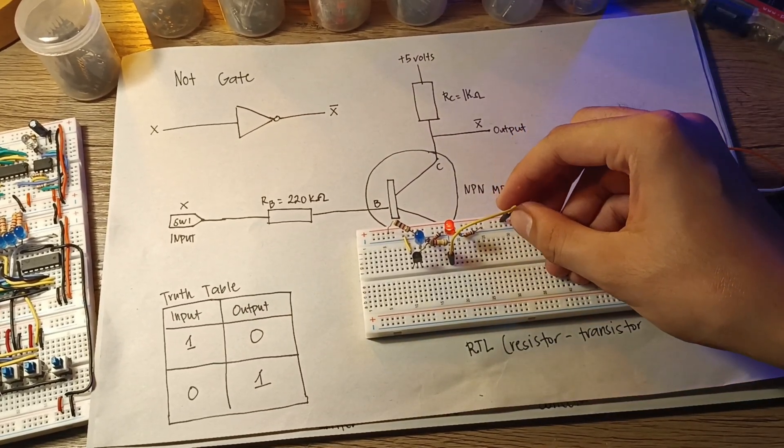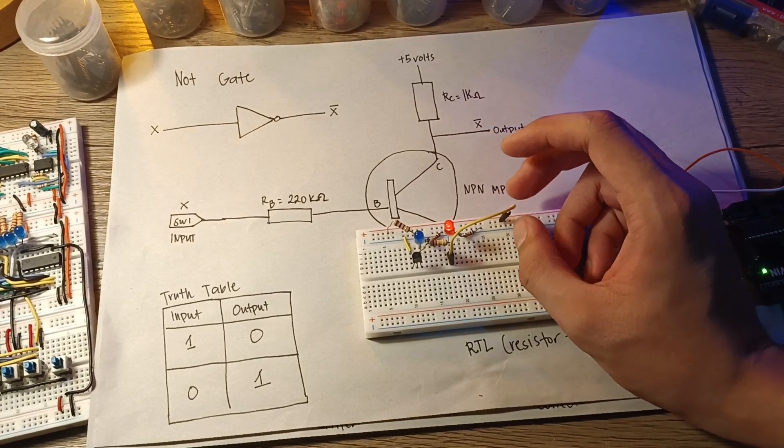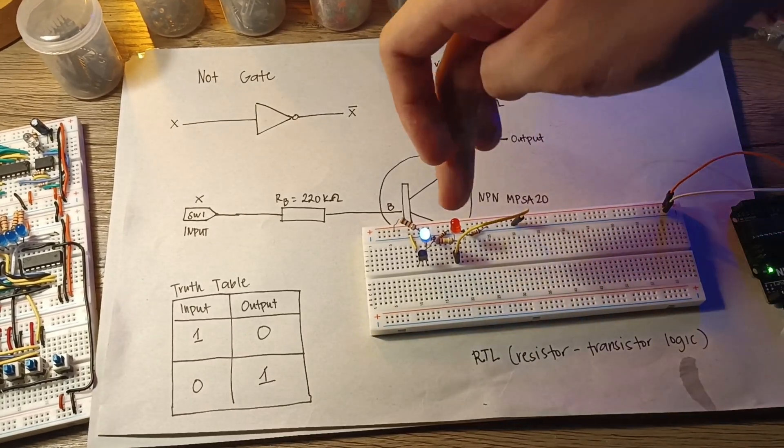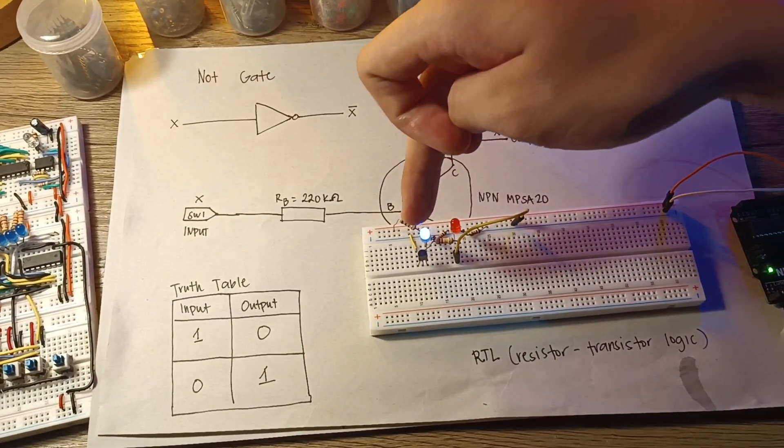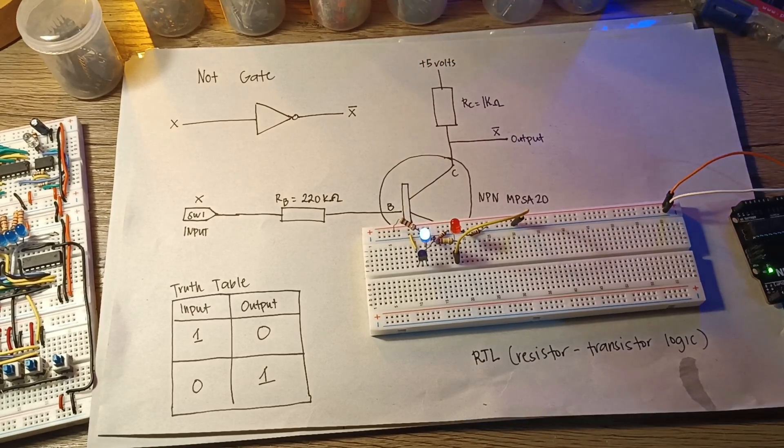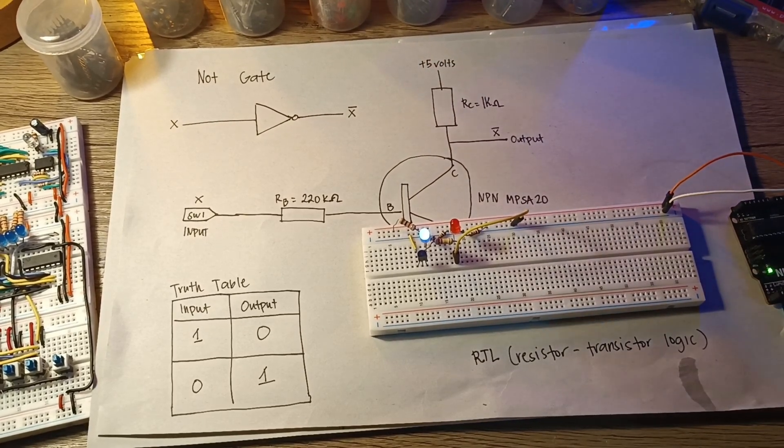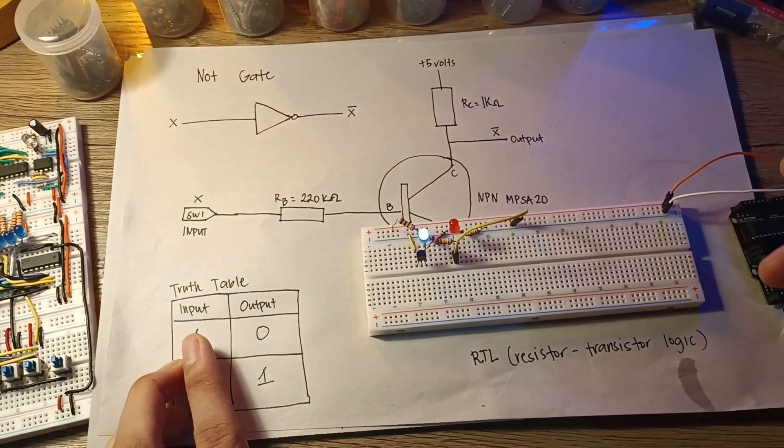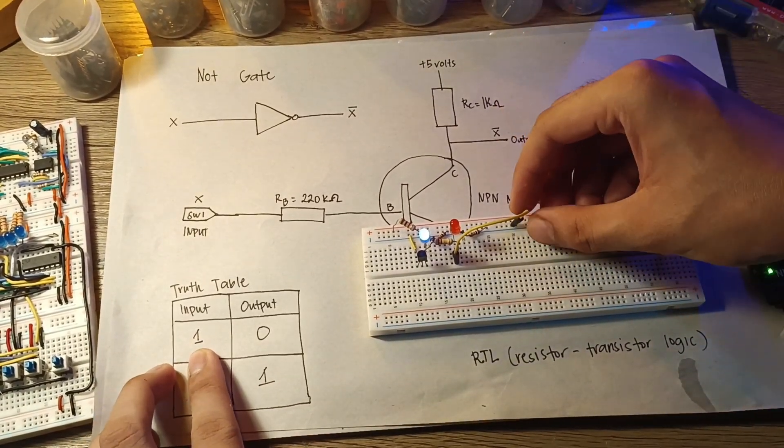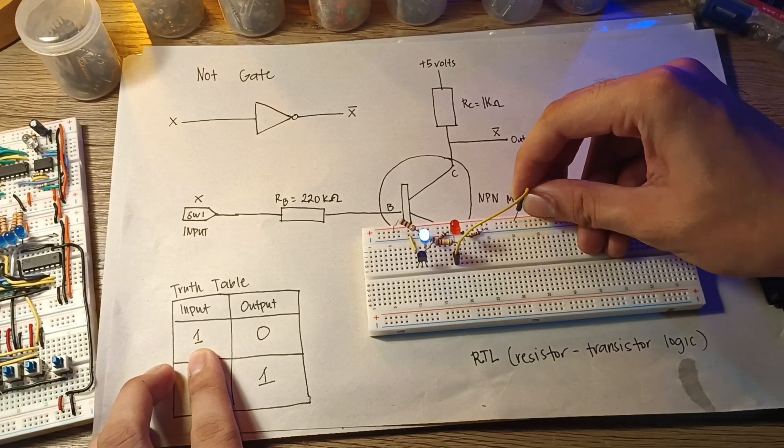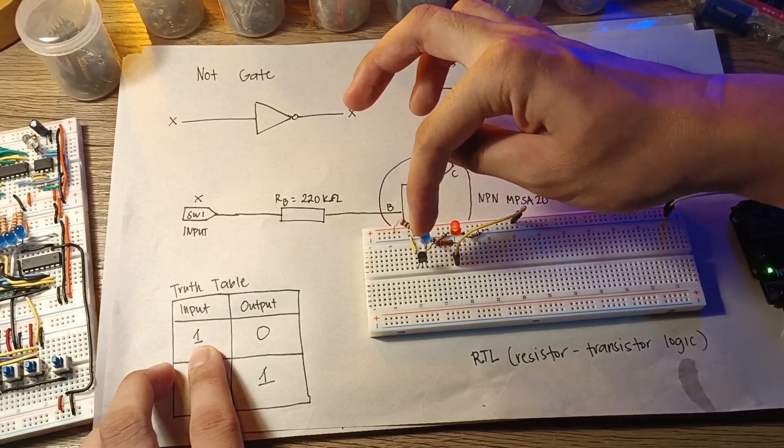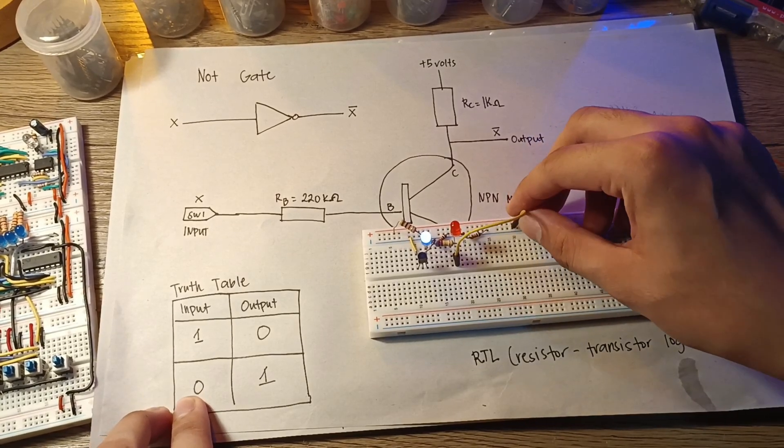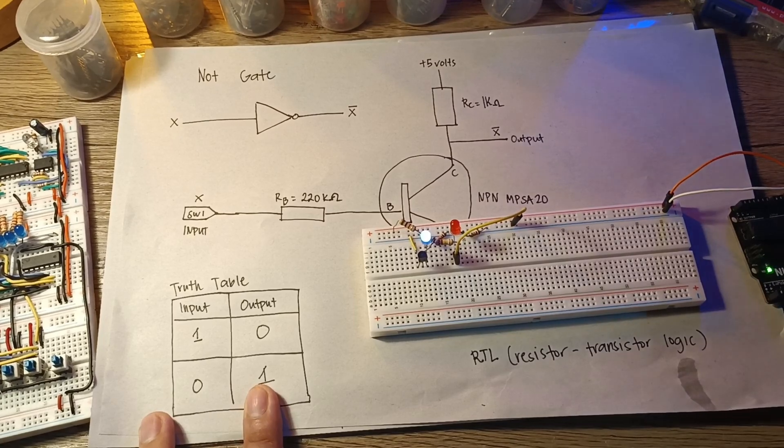But what will happen if we switch this to the ground rail? If we switch this to the ground rail, if we input a zero, the output will be one. That is an inverter. It inverts, it flips. The truth table: if we input a one, which is in the positive, it will output a zero. But if we input a zero to it, it will output a one. That is the inverter.